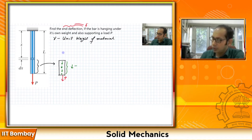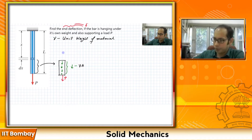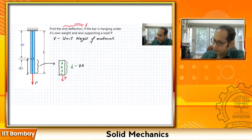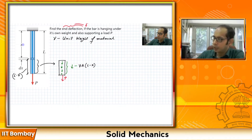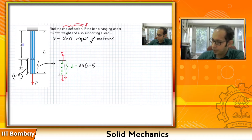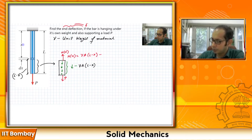If I draw the free body diagram of that particular part — the bottom part — I have load P acting and the internal self-weight. This self-weight is gamma times the area of cross-section A times the length. The total length of the bar is L and we have x, so this particular length is L minus x. So the self-weight is gamma·A·(L − x). To balance all of this, you have the internal force N at x, which equals gamma·A·(L − x) plus the load P.